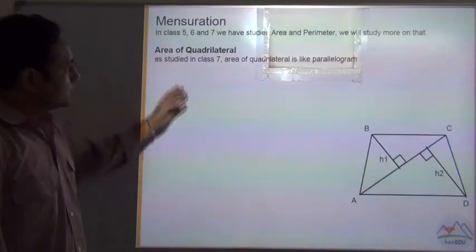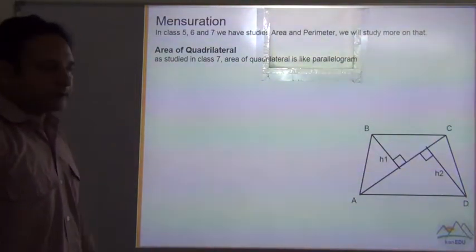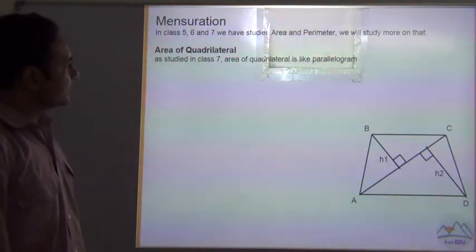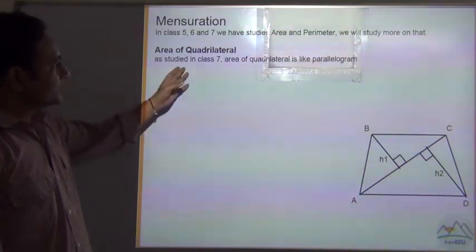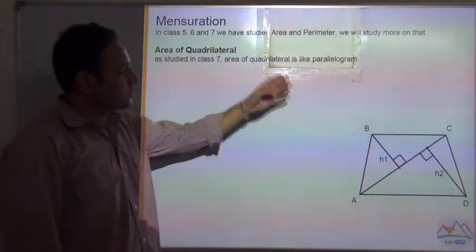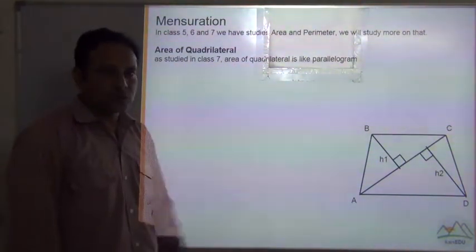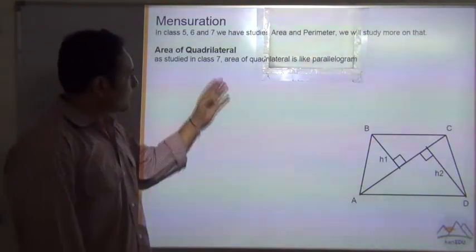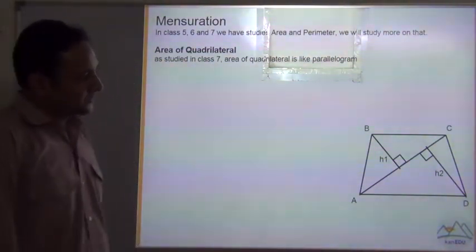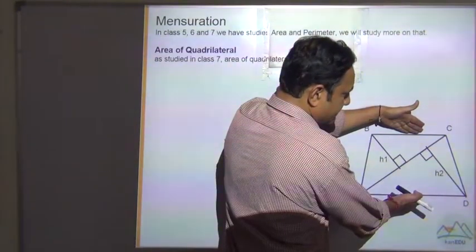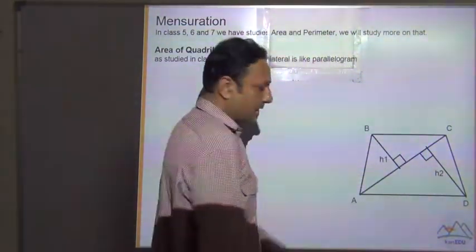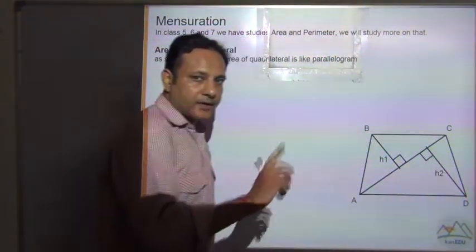So now we will study the area of quadrilateral, how to find out the area of quadrilateral. So in class 7, area of quadrilateral is like a parallelogram. This is a quadrilateral like a parallelogram where two of these sides, opposite sides are parallel and the other two sides are not parallel.